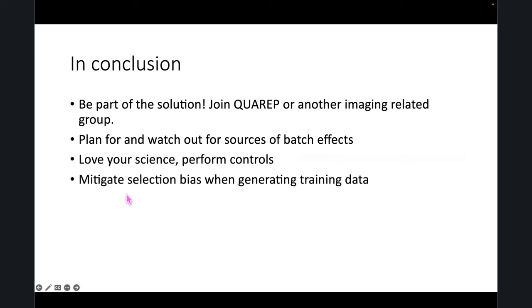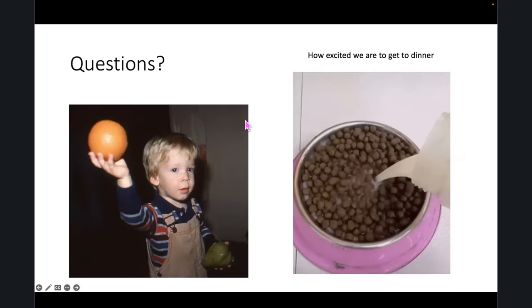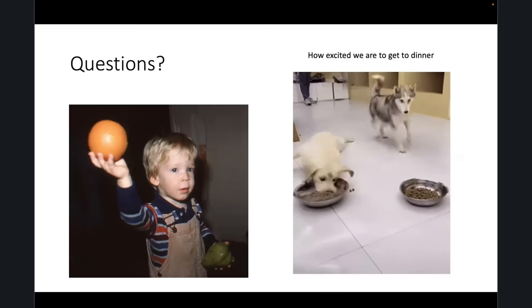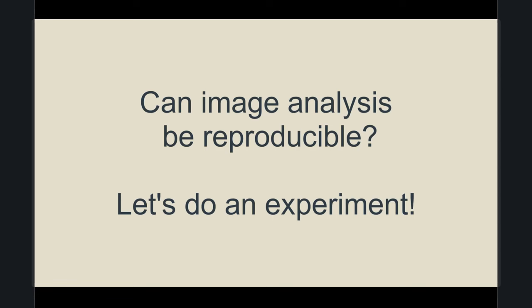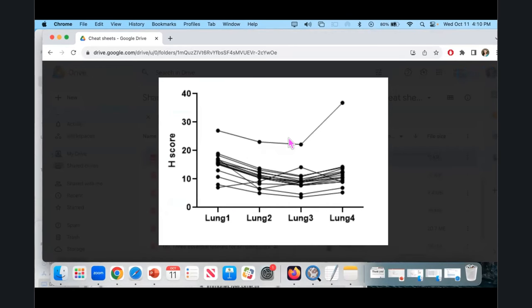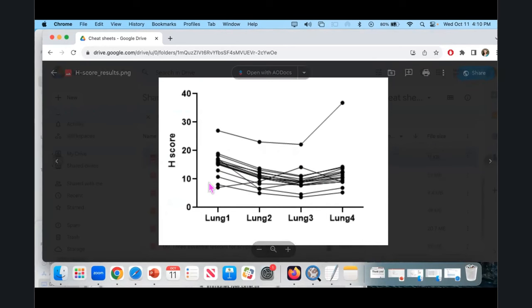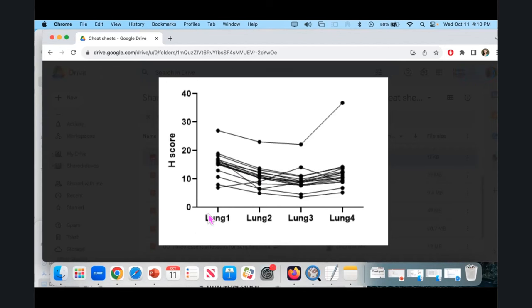In conclusion, be part of the solution and mitigate selection bias. Looking at the results from our experiment yesterday — the response of 70 people — with a few exceptions, although using very different settings, the trend is the same kind of response. The values are different, but the trend is very similar. That's something I like about doing image analysis: even if it's imperfect, it usually recreates a trend that another person found in the data, if applied systematically.